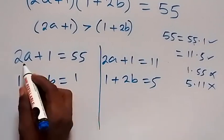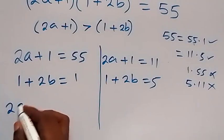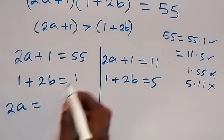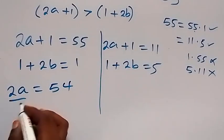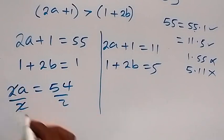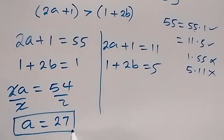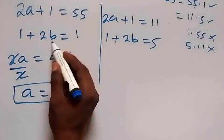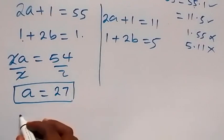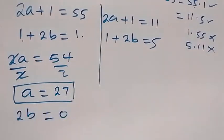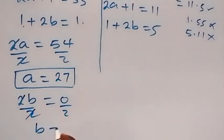Solving Case 1: taking 1 to the other side gives 2a equals 54, and dividing both sides by 2 gives a equals 27. For b, we get 2b equals 1 minus 1, which is 0, so dividing by 2 gives b equals 0.